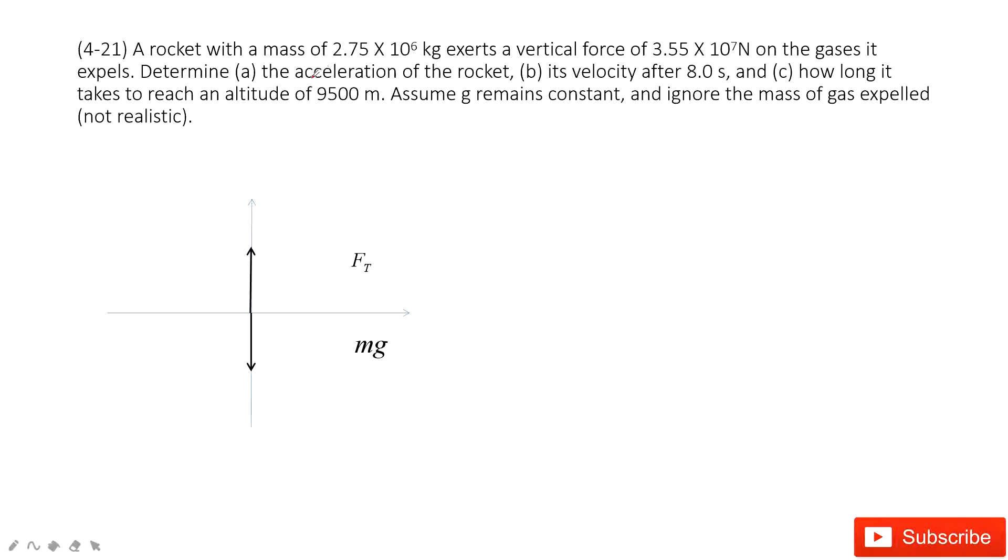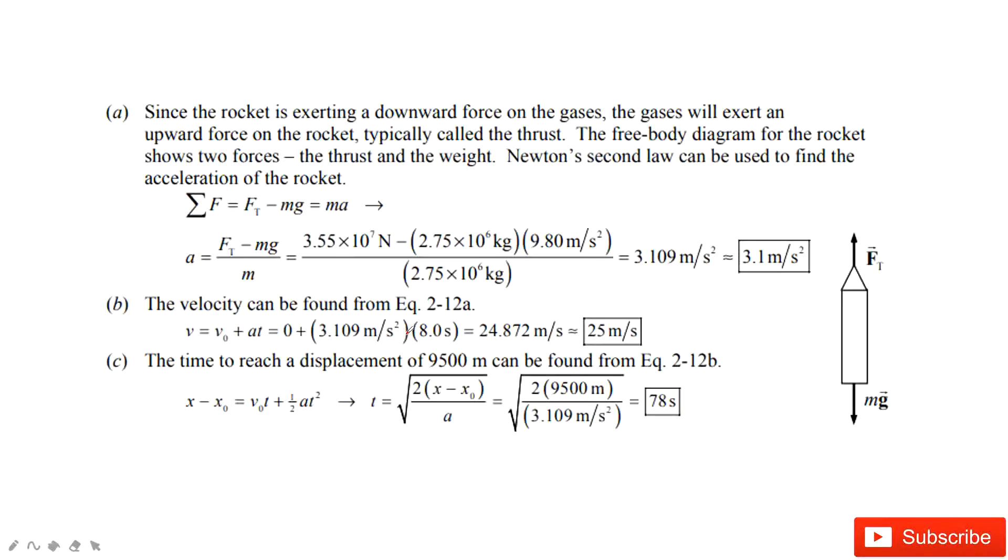Then the first question asks you the acceleration. We can see Ft is given. The mass is given. Can you find acceleration? Sure. We can consider Newton's second law. This is Ft minus Mg equals Ma. In this one, it is very easy for us to get the acceleration for this rocket.